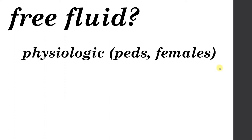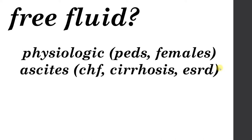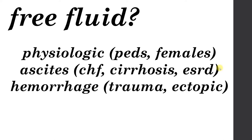Once you've identified free fluid, ask yourself what it could be. If it's a small amount and it's a pediatric or female patient, that could be physiologic or normal free fluid. If the patient has a large volume and a history of heart failure, cirrhosis, or ESRD, that could be simple ascites. Or if the patient is hypotensive and was recently in an accident or is at risk for pregnancy, that could indicate intra-abdominal hemorrhage. Fluid all looks the same on ultrasound — it will be anechoic — and there's no way to tell whether it's ascites or hemorrhage, so you must put it into the right clinical context.